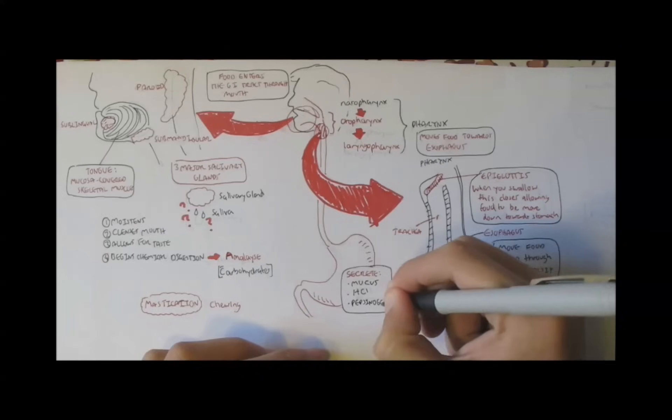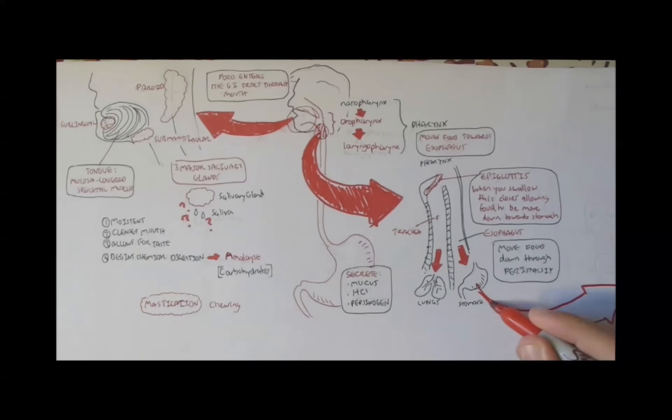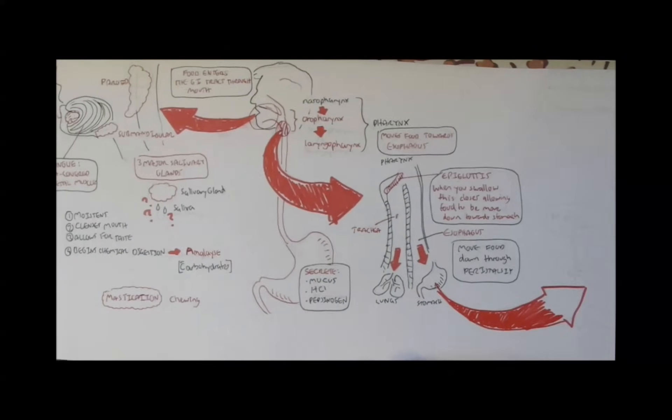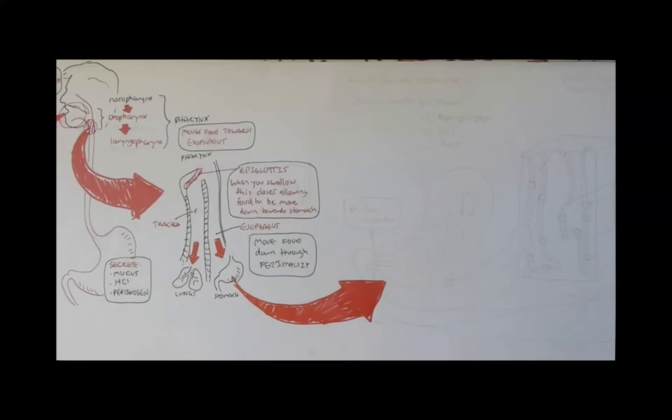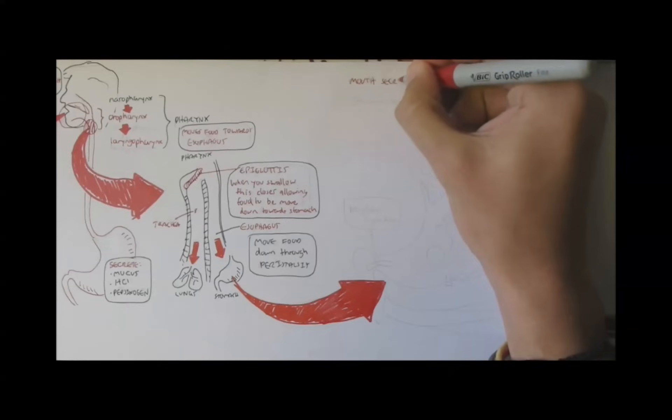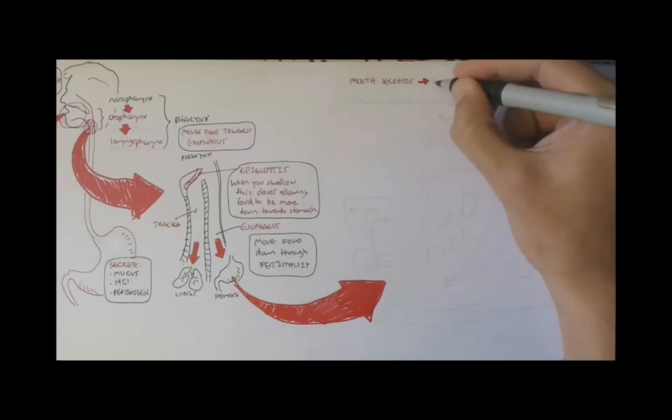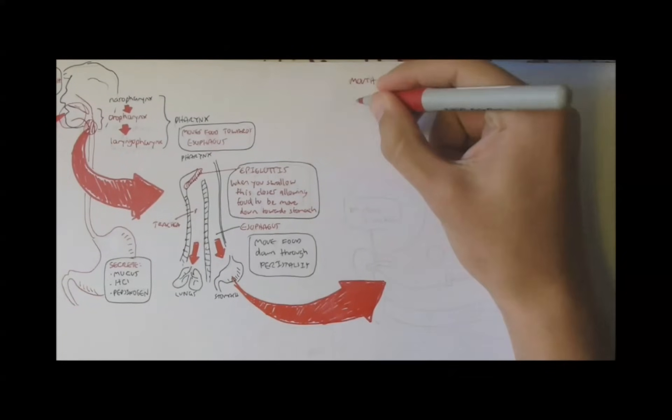And the stomach secretes a variety of enzymes and chemicals, including mucus, hydrochloric acid, and pepsinogen. So we will look back, now if we take a look back, we know that the mouth secretes amylase for carbohydrate digestion.